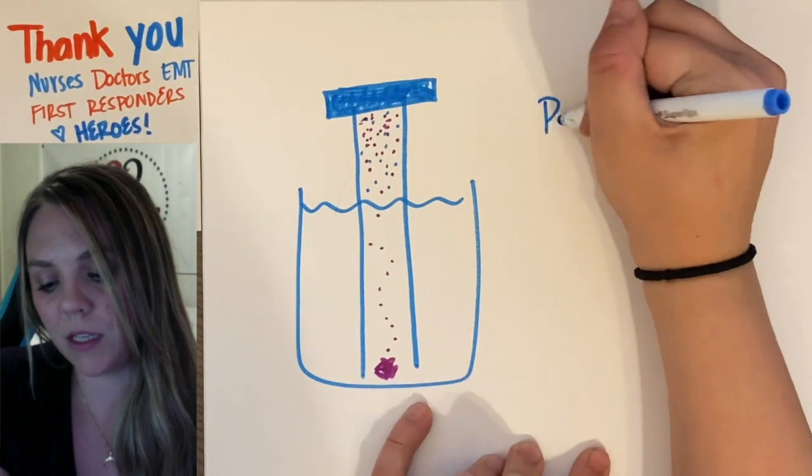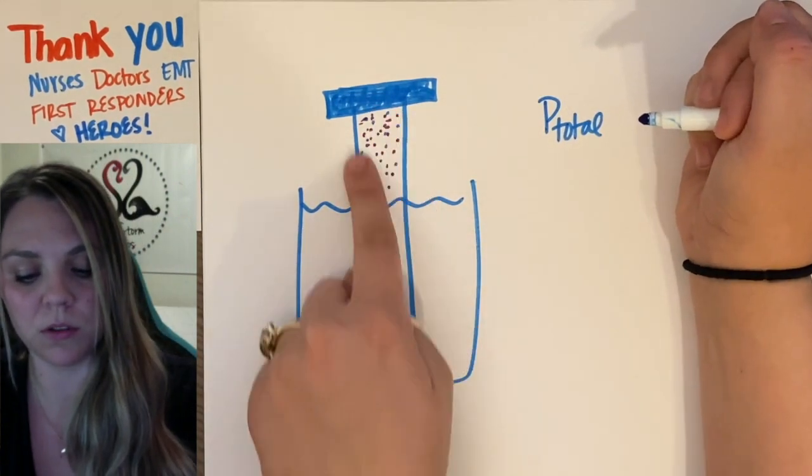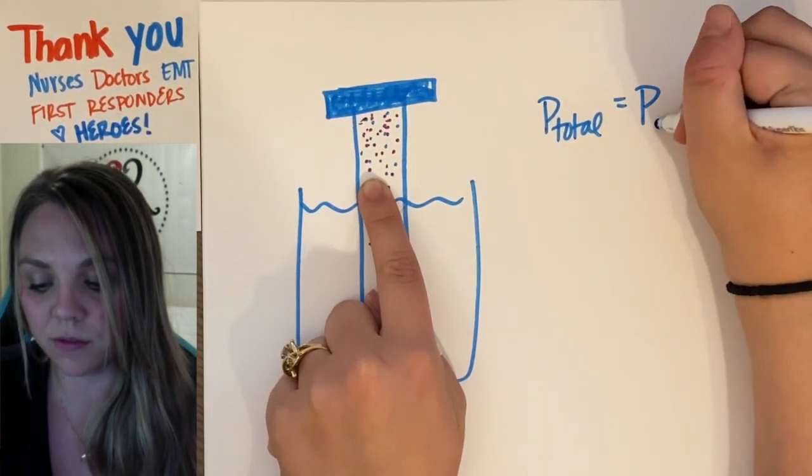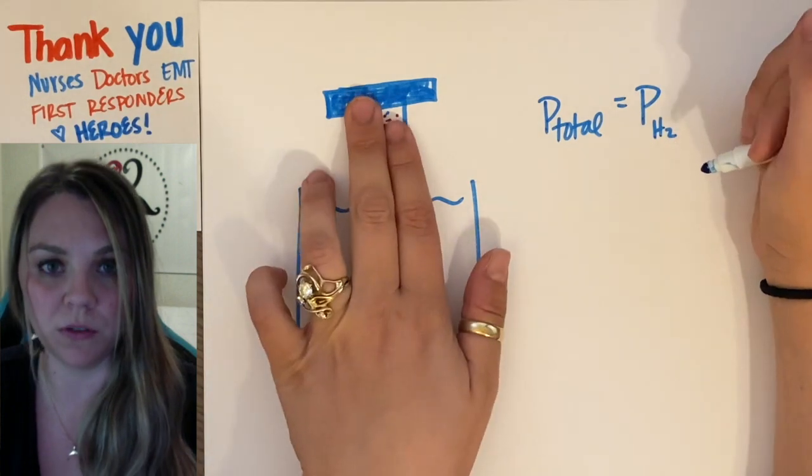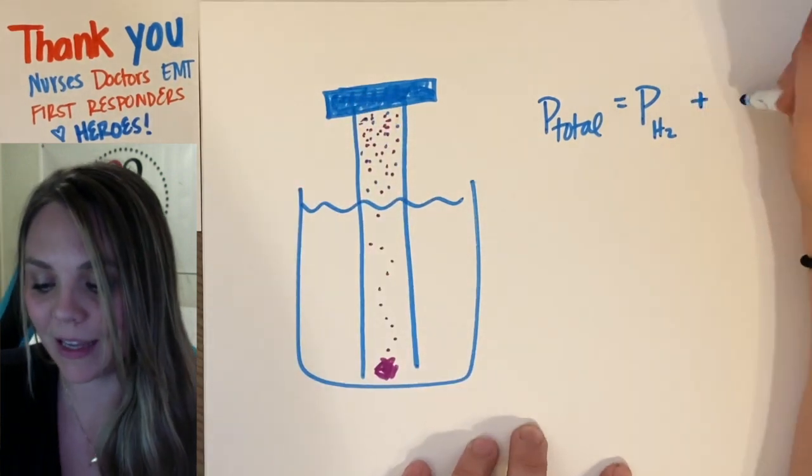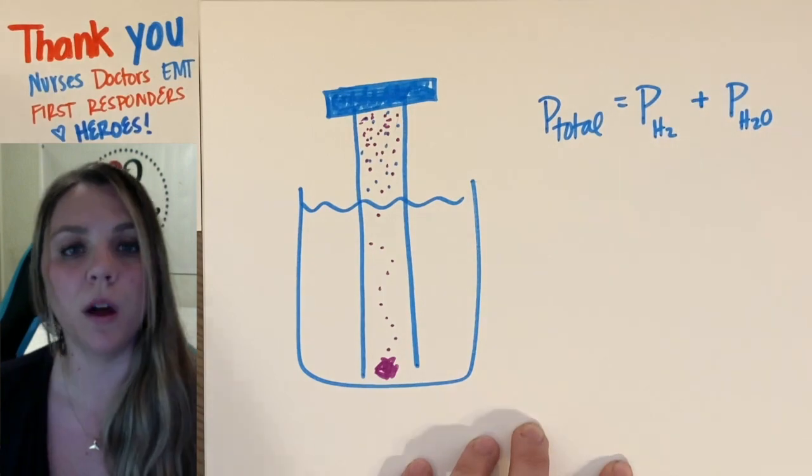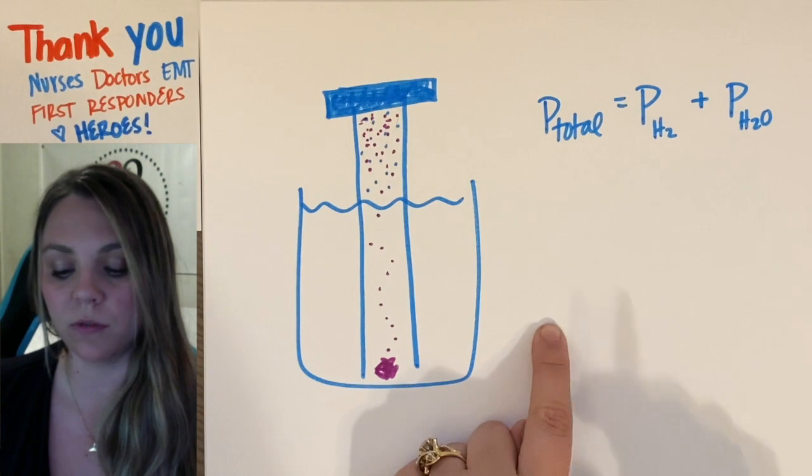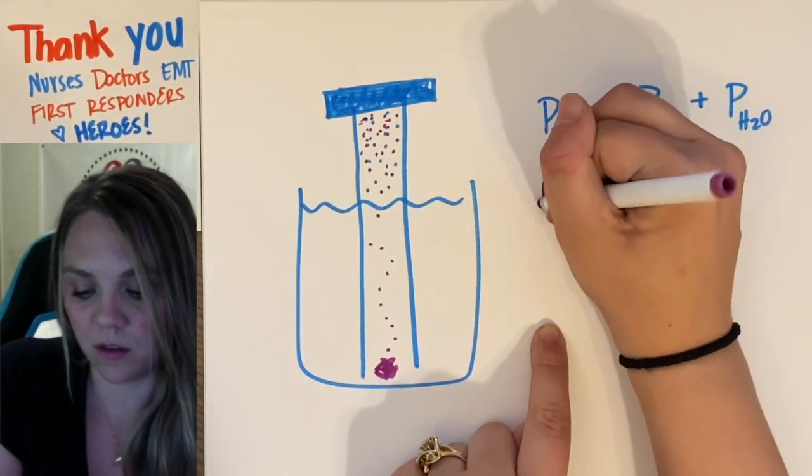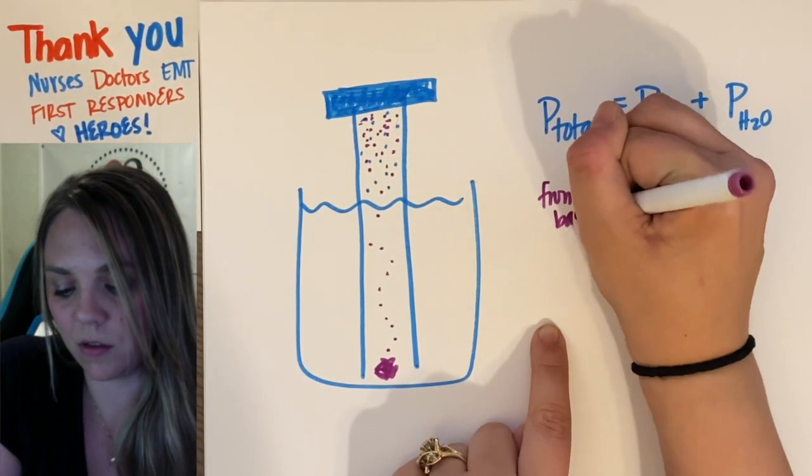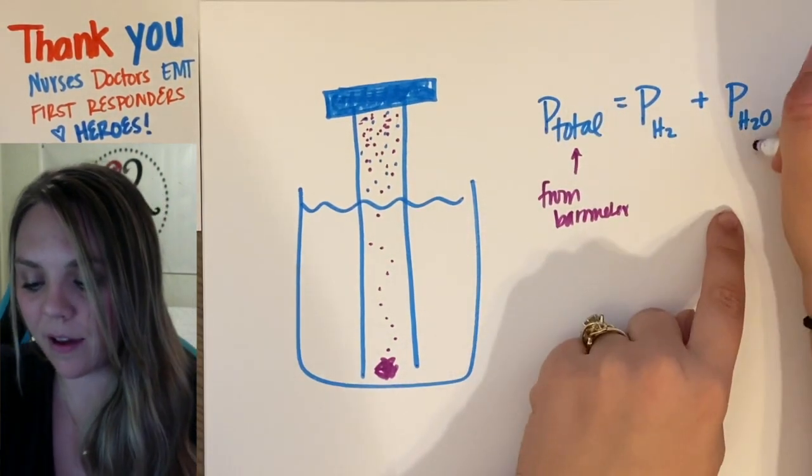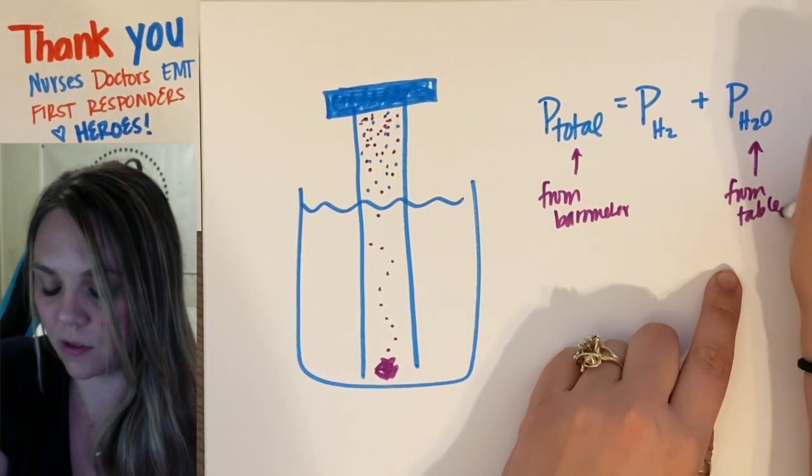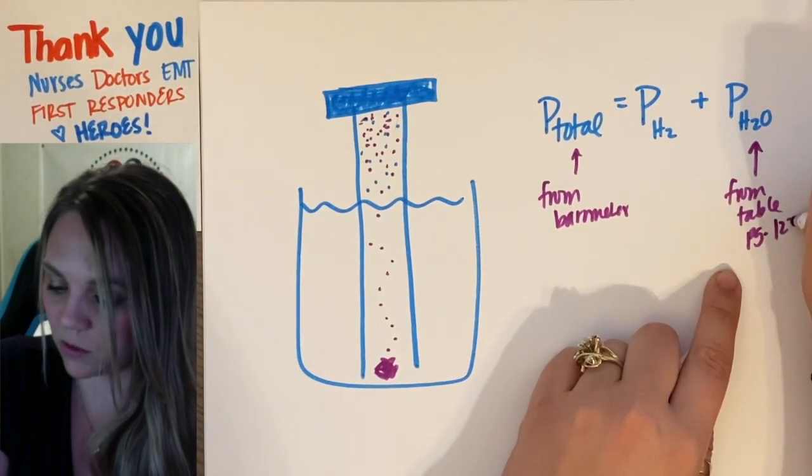The pressure of our total gas up here that we created is going to be the pressure of the hydrogen gas that was produced from our reaction and the pressure of our water vapor that's in there. So I have my P total from the barometer, and I have my pressure of water from the table on page 122.